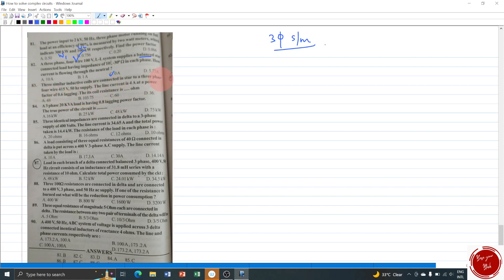Question number 83: 3 similar inductive coils are connected in star. Inductive coils is connected in star to a 3 phase 4 wire 415 volt 50 hertz supply. The line current is 4 ampere at a power factor of 0.6 lagging. The coil resistance is how much ohms. Now whatever values are given in the question, it will be in the line system. That is line voltage. Here 415 volt indicates the line value of the voltage. So it is VL is equal to 415 volts. And for current, it is directly given it is line current. So IL is equal to 4 ampere. Power factor cos phi is 0.6 lagging.